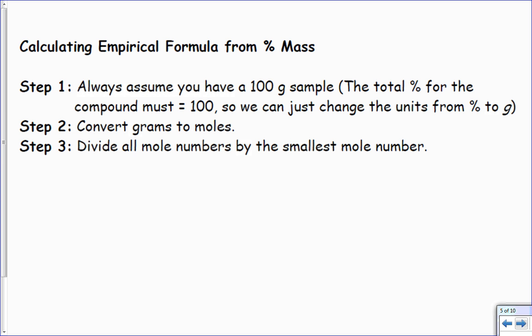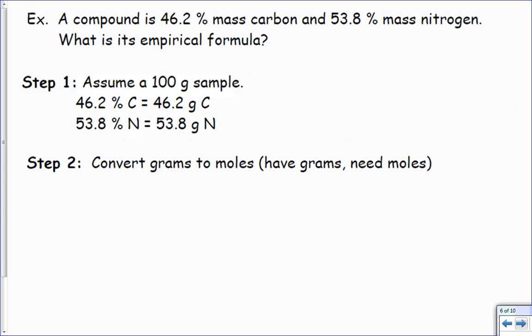You always assume we have a hundred grams of something. We're going to do that because it's easier to do percentages with a hundred, right? Convert from grams to moles, divide all the mole numbers by the smallest mole number. So if I assume I have a hundred grams and it's 46% carbon and 53% nitrogen, then this conversion right here is super fast because it's a hundred percent. 46% of a hundred percent is 46 grams. Now what I need to do is I need to convert into moles.